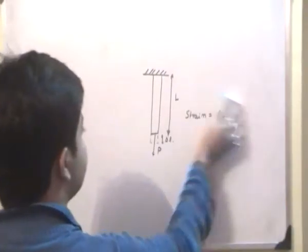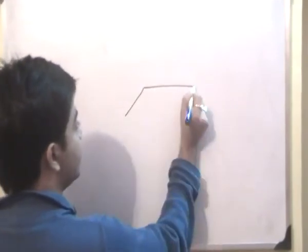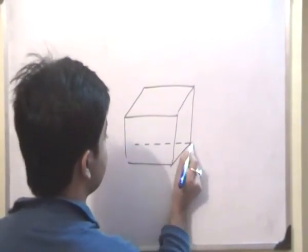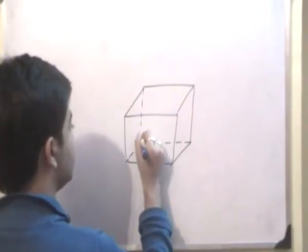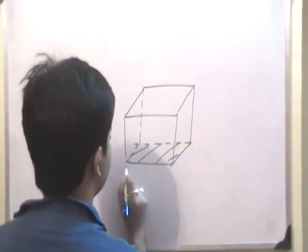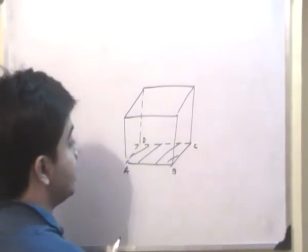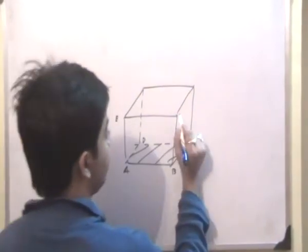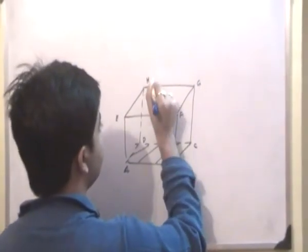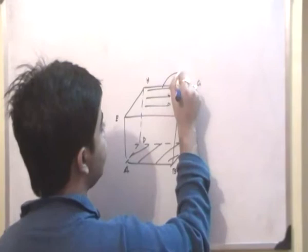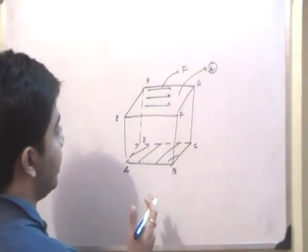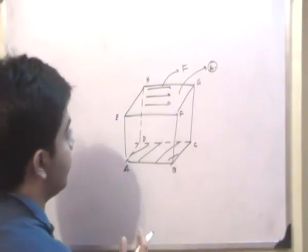Next, we will understand the concept of shear strain. For example, if there is a box rooted to a table, suppose this plane that I am shading is ABCD. As it is rooted to the table, this plane won't support any displacement. But the plane EFGH, due to a force F applied parallel to this cross-sectional area A, will have a change in its position.